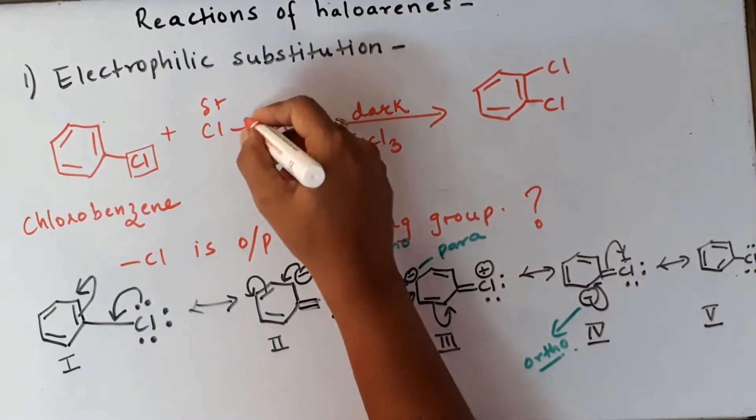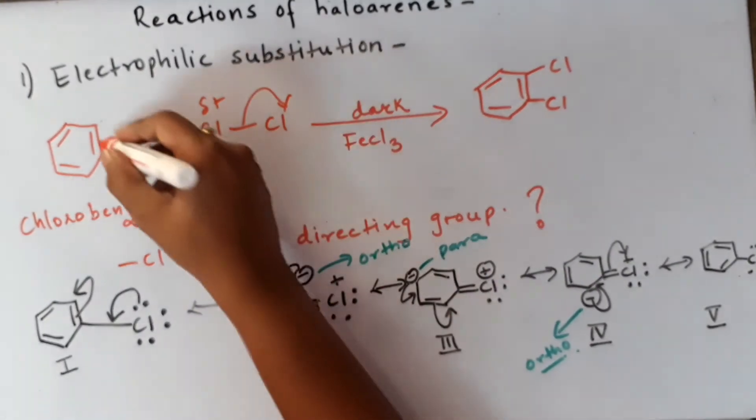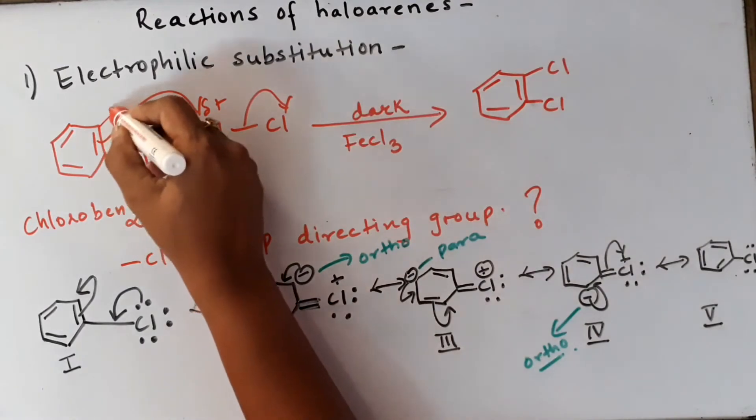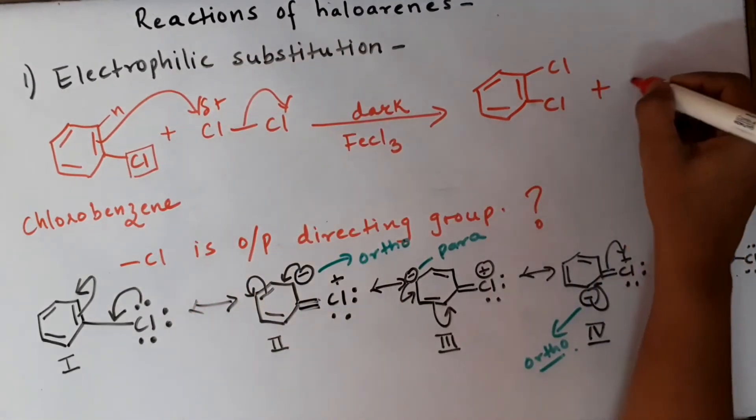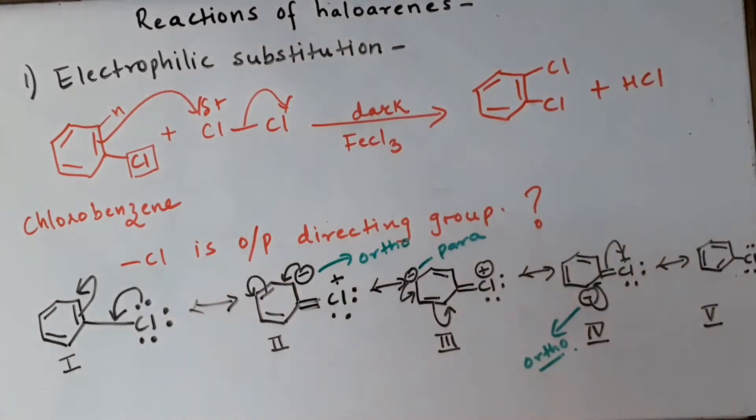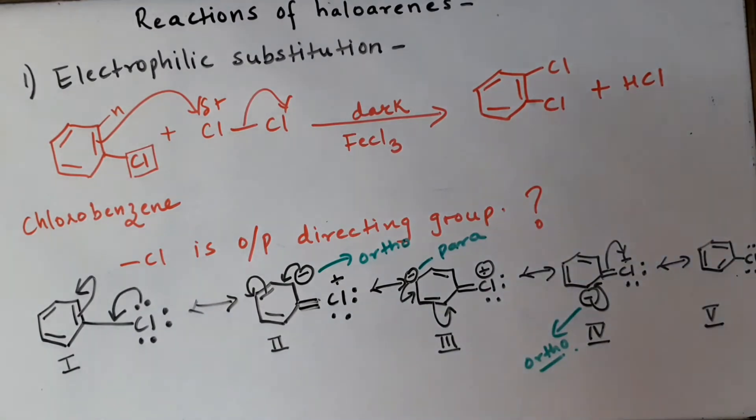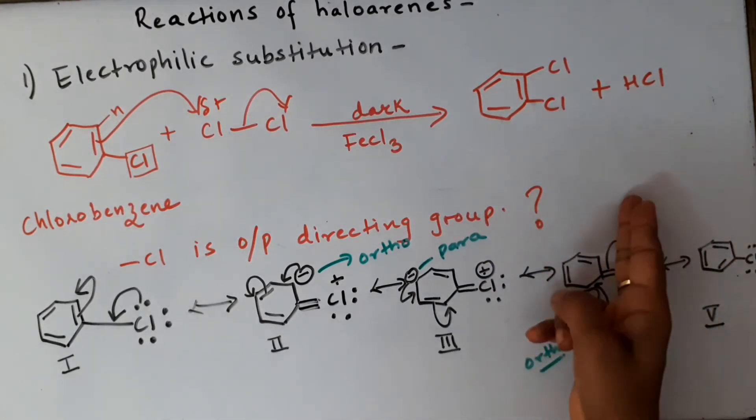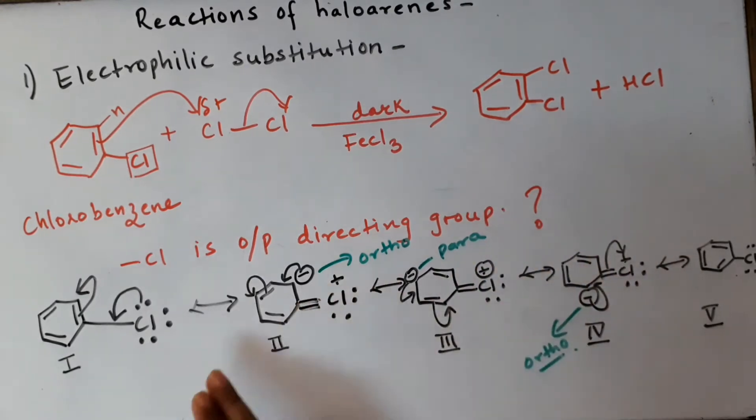The Cl- goes out and from here H+ will go out from the benzene ring, so that H+ and the Cl- becomes the byproduct HCl. When such groups are attached which are electron donating via resonance, we will get ortho-para directed products. This is the minor product and we will get para-dichlorobenzene as the major product.